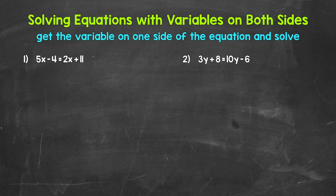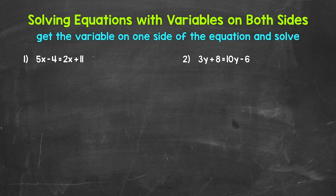We have 5x minus 4 equals 2x plus 11, and we need to figure out what x equals. The first thing we need to do is get the variable on just one side of the equation. We can do this either way — left or right — either will work. But my suggestion: look to avoid negatives as far as the variable goes. We can do that by getting rid of the one with the coefficient that is smaller in value. That's going to be 2x for number one.